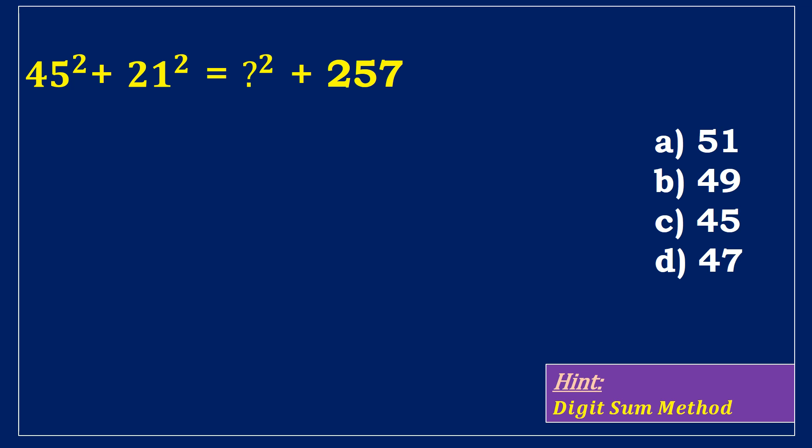45 squared equals 4 plus 5 square, which is 9 squared equals 81. The sum of 8 and 1 is 9. Likewise, 21 squared equals 2 plus 1 square, which is 3 squared equals 9. In the left part of the equation, the sum of 9 and 9 is 18 and the sum of 1 and 8 is 9. In the right hand side of the equation, the digit sum of 257 is 2 plus 5 plus 7 is 5. To find the question mark square subtract 5 from 9, and we obtain the value 4.